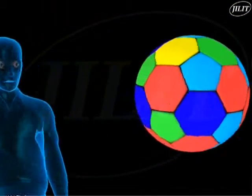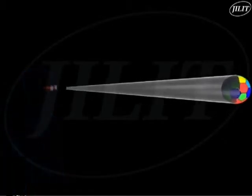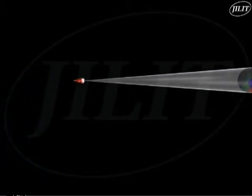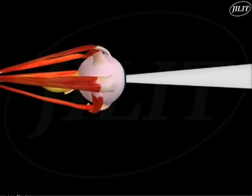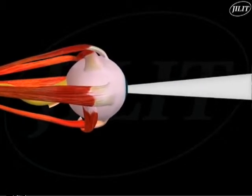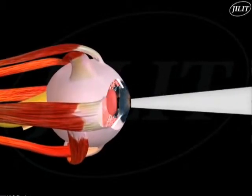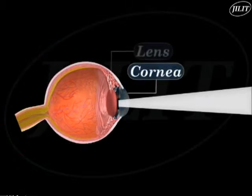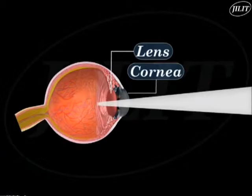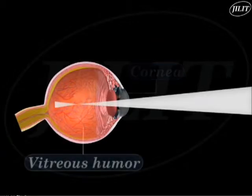Light rays are reflected from the object and enter our eyes through the pupil, after passing through the cornea and aqueous humor. The light rays are converged first by the cornea and then by the lens, and the light wave continues traveling through the vitreous humor.